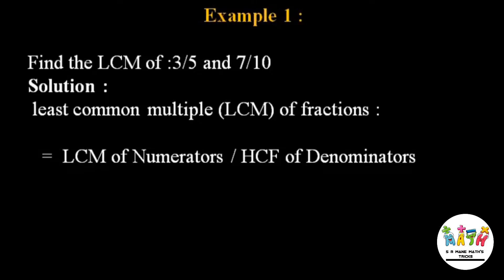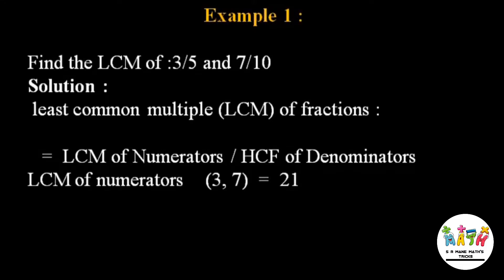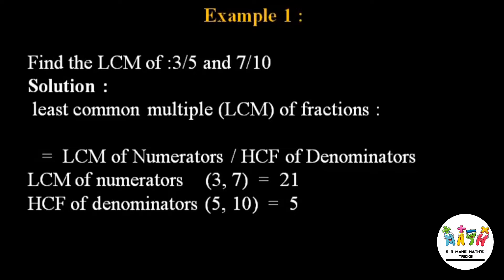Using the formula, we find the LCM of the numerators and the GCF of the denominators. The numerators are 3 and 7, so LCM of 3 and 7 is 21. The denominators are 5 and 10, and the GCF of 5 and 10 is 5.